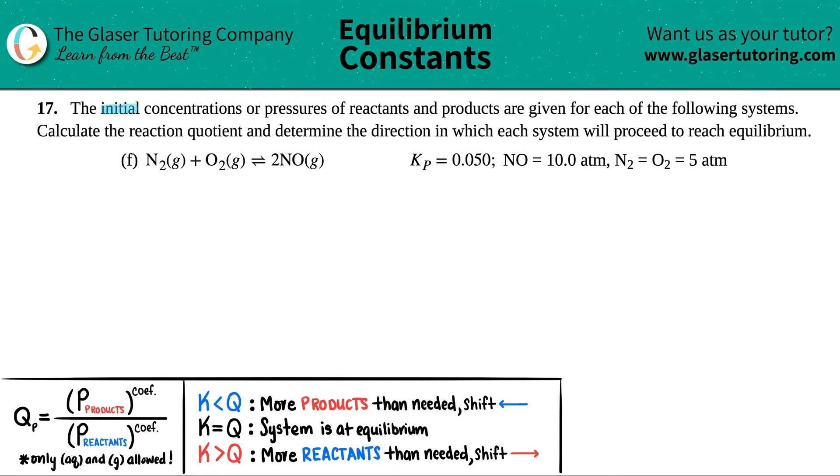Number 17. The initial concentrations or pressures of reactants and products are given for each of the following systems. Calculate the reaction quotient and determine the direction in which each system will proceed to reach equilibrium. So let's work on the first thing, let's try to find out that reaction quotient.